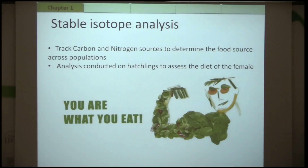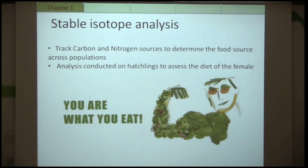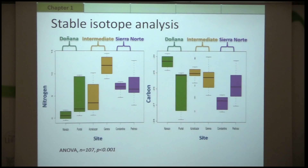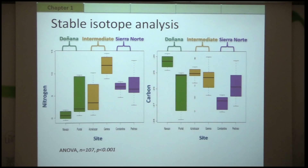I also did stable isotope analysis to track the different sources of carbon and nitrogen in the food niche of those populations. The analysis was conducted on hatchlings right after they hatched from their clutches and right before they started free feeding, to directly assess the diet of the female that provided the yolk. For both nitrogen and carbon I did an ANOVA analysis, and I do get significant results, showing a decline in the food source across those populations.